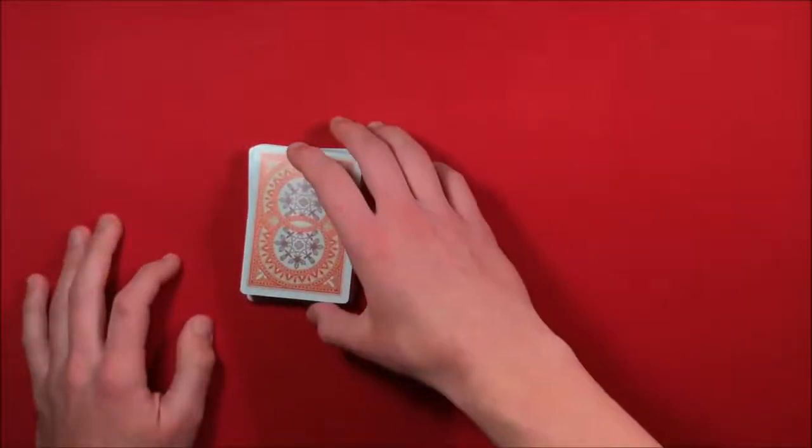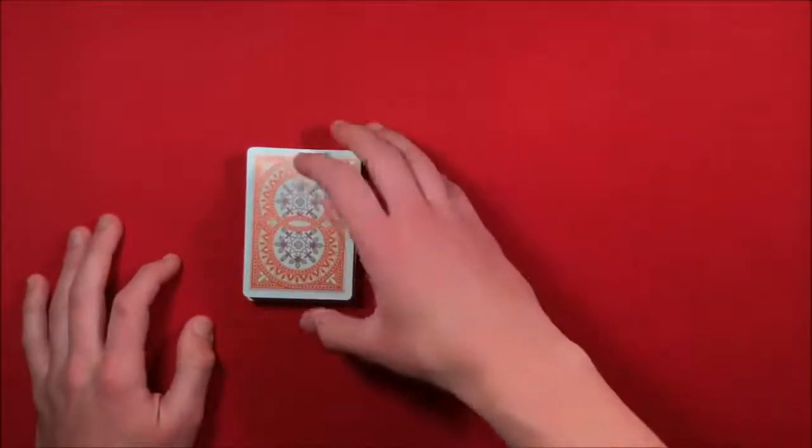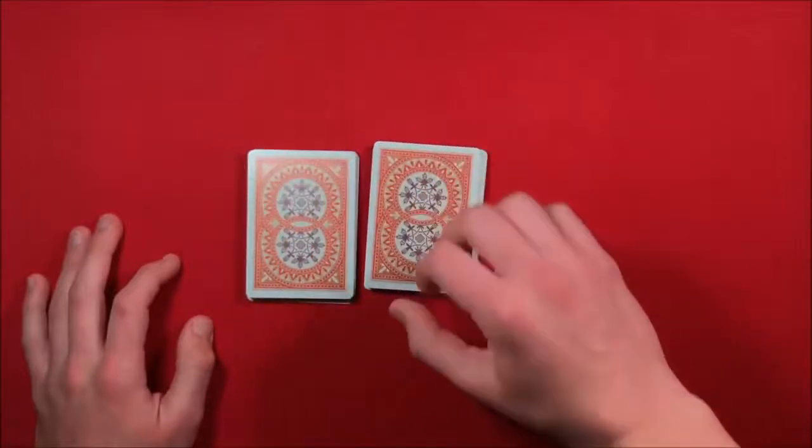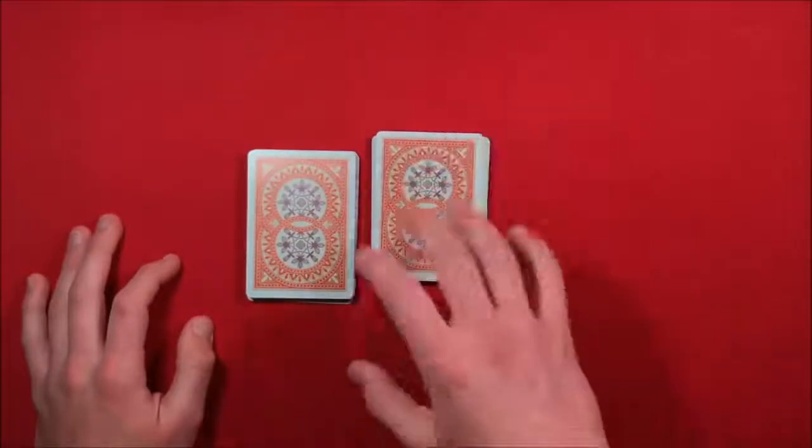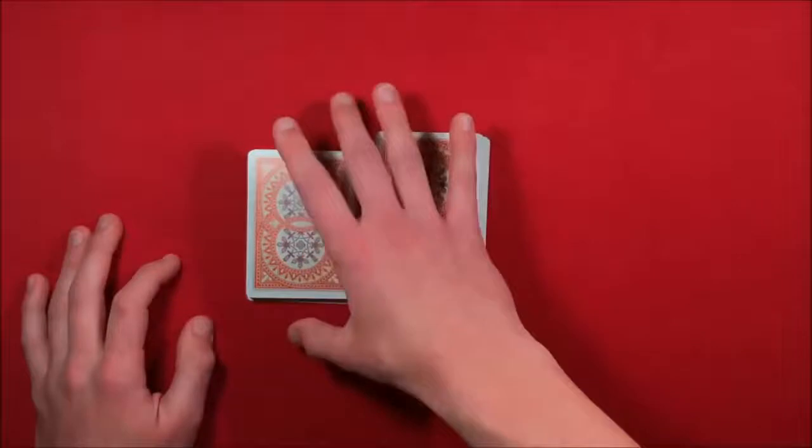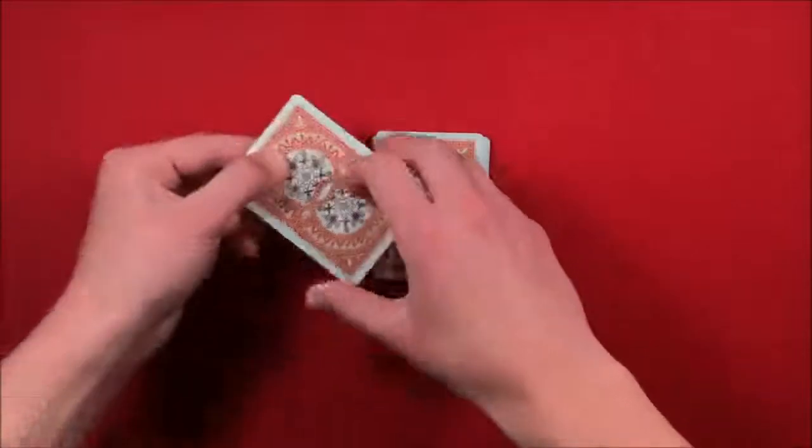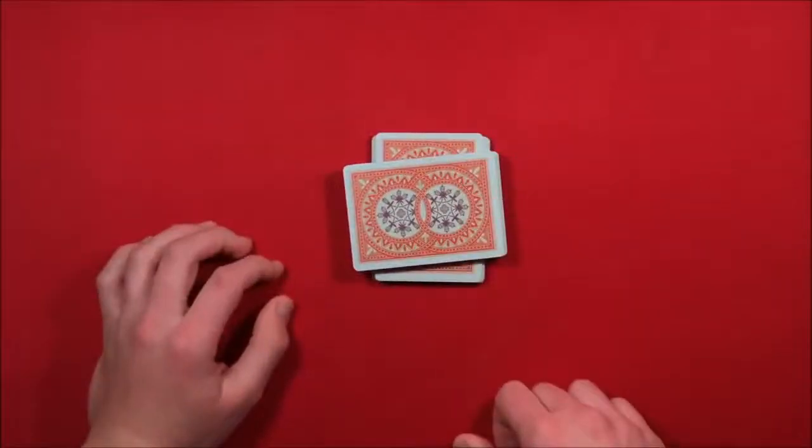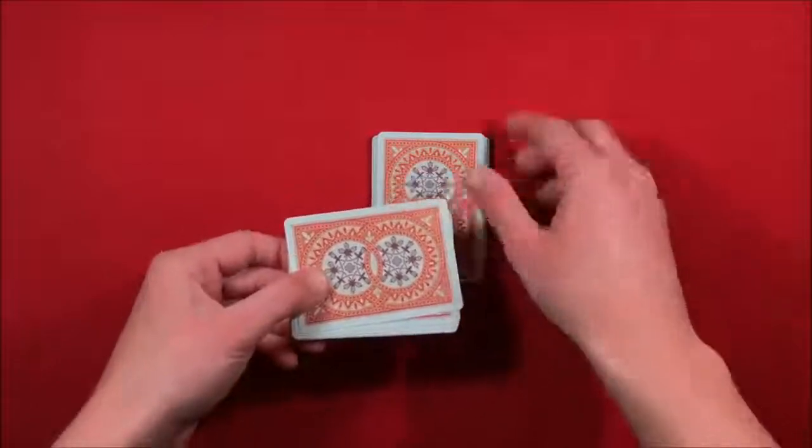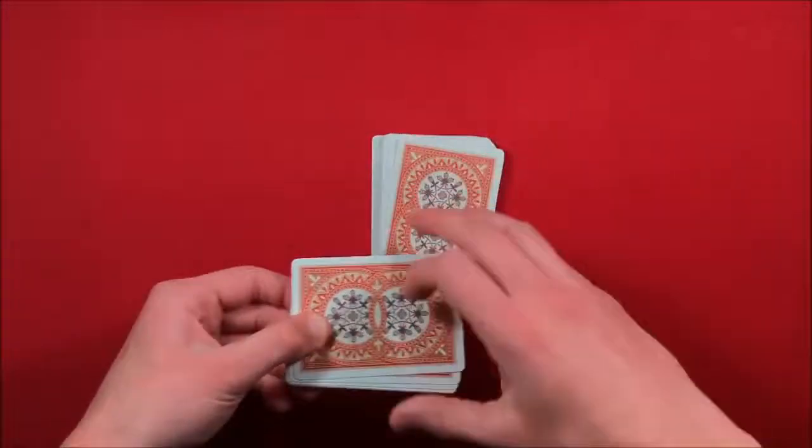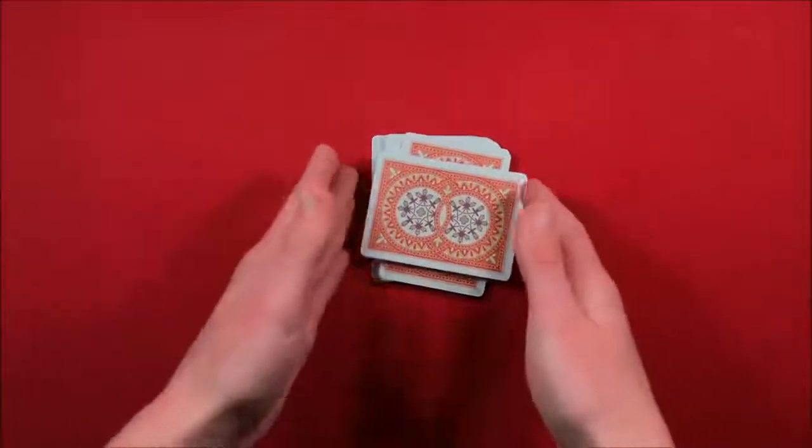When you cut the cards, tell the spectator to cut anywhere they like. You move the packet to the right, then take the bottom half, tilt it, and put it on top of the other packet. The top card is going to be right there—that's how the trick works.